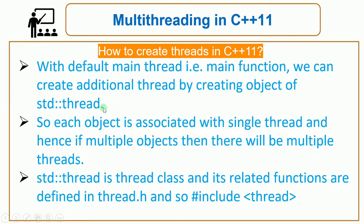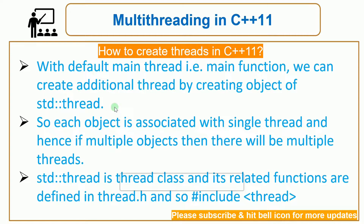std::thread is a class defined in the header file. You have to include it using #include within angle brackets with the name 'thread'. In this header file the thread class is defined, and you can use its related functions while creating threads. To create a thread, simply create an object of this thread class.